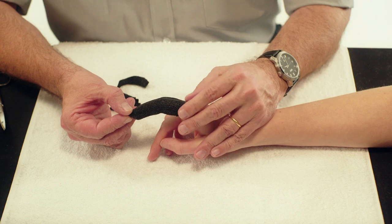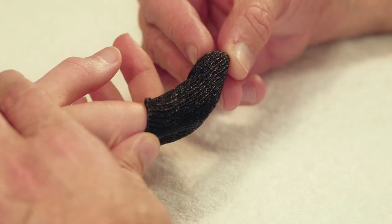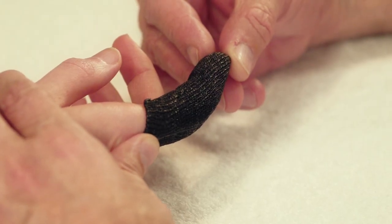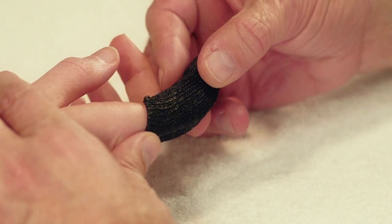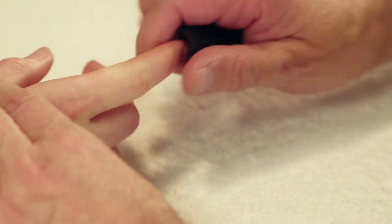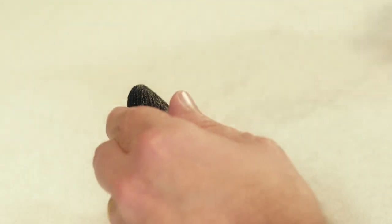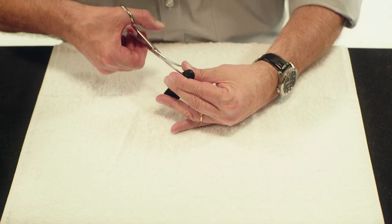When the orthosis has hardened, it can be removed and trimmed as desired. First, expose the entire nail.